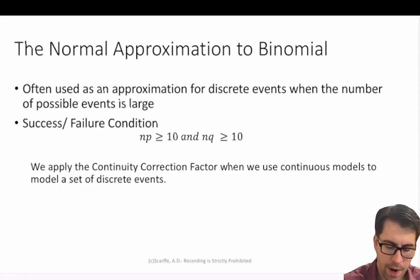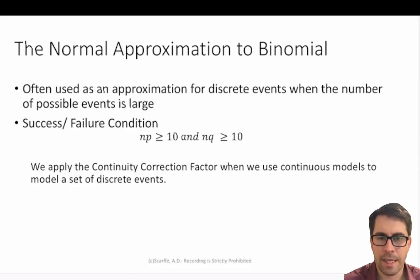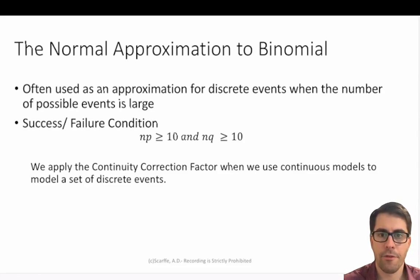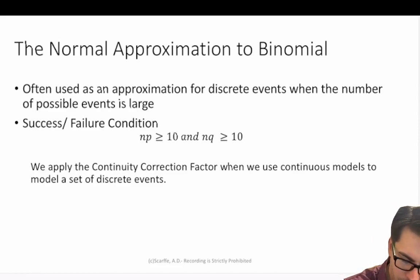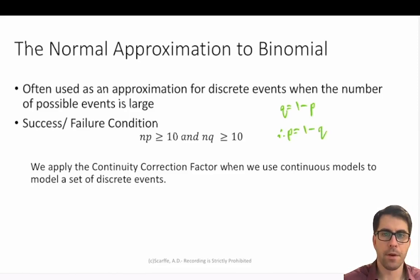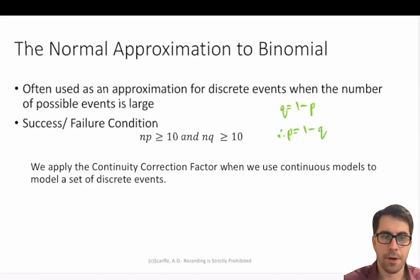When using normal approximation we have to determine if the conditions are met. First, the observations must be independent of each other — if they aren't, it's a non-starter. Assuming independence, we move to the second condition: the success and failure condition, where n times p is greater than or equal to 10 and n times q is greater than or equal to 10. Recall that q is equal to 1 minus p. When both conditions hold, normal approximation of the binomial may be appropriate.